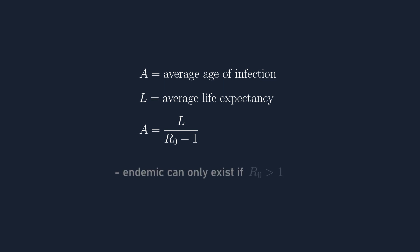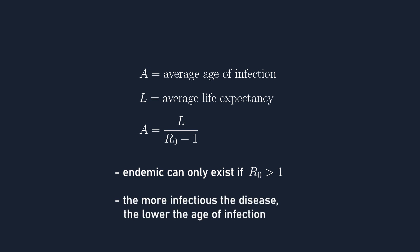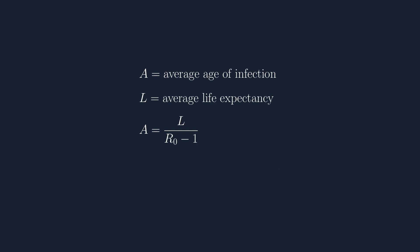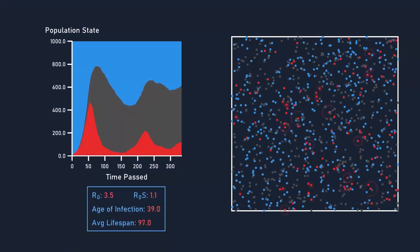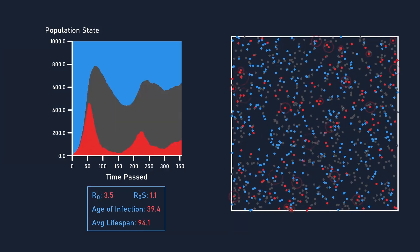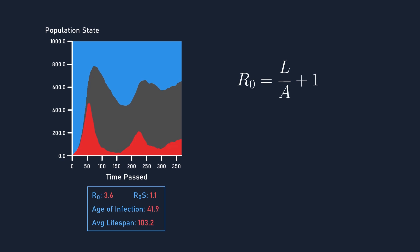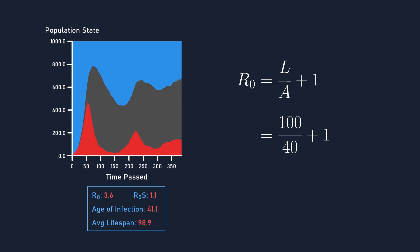This makes sense: an endemic can only exist if R0 is larger than 1, because the disease needs to be continually spread to more people even when not everyone is susceptible. Also, the more infectious the disease is, the earlier a newborn person will be likely to catch it — and this is shown in the equation, as the larger R0 is, the smaller A is. Rearranging the equation, R0 is just life expectancy divided by age of infection plus 1. Let's look at our simulation again with the average age of infection and average lifespan showing. Pretending we don't know the R0 value of 3.5, we plug in the average lifespan and age of infection — around 100 days and 40 days respectively — and we get 3.5.